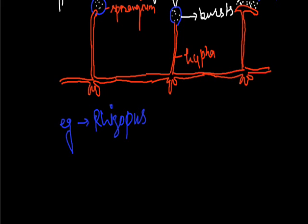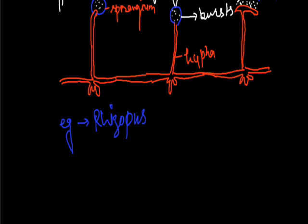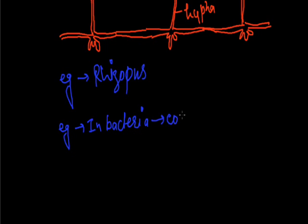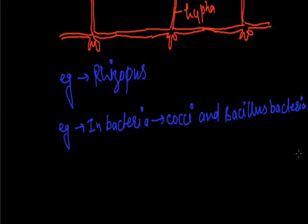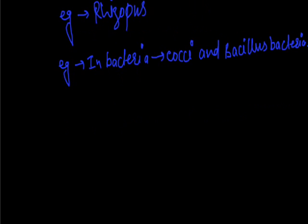In bacteria, this type of reproduction is found in cocci and bacillus bacteria. That is all about spore formation.